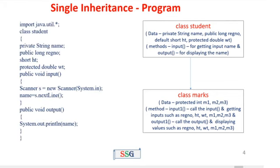Now let's look at the program. First is the import statement: import java.util.Scanner. Then the first class, Student, declares variables: private String name, public long registerNumber, short height (default access), and protected double weight. Inside the public void input function, we get input for the name variable. The public void output function uses System.out.println to print the name. The Student class definition is complete.